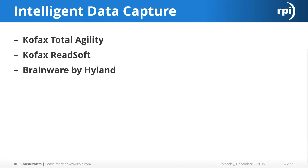For data capture — all the keyword values like line items and header details — the tools vary depending on what features and functionality you need. Options include COFAX Total Agility, COFAX ReadSoft Online, and Brainware by Hyland. With all these options you can still use OnBase as well, so everything we're going through can be plugged into OnBase. It really comes down to whatever is best for your organization.